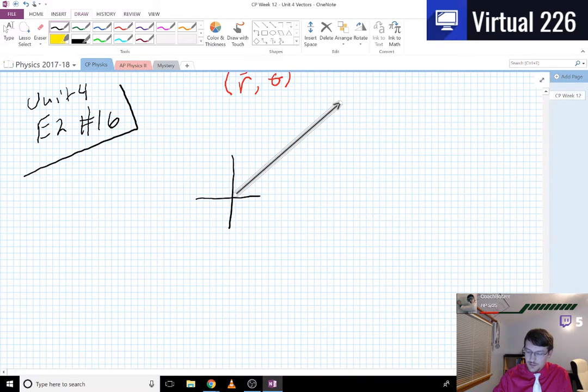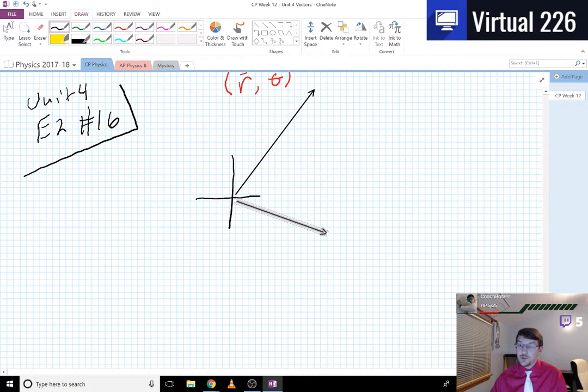...long vector B, probably actually facing up a little bit more like that. Here is your shallow vector A, like that, to scale. In this problem though, they're asking to do B minus A, which is the same as...